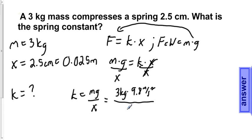divided by 0.025 meters is equal to 1,176 newtons per meter,